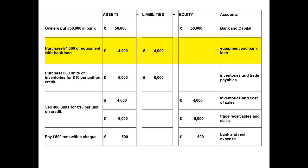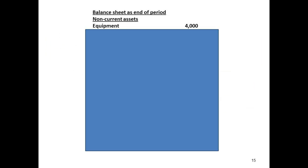I have identified one transaction relating to non-current assets — the purchase of equipment for £4,000. So I can start my balance sheet by recording £4,000 for equipment.